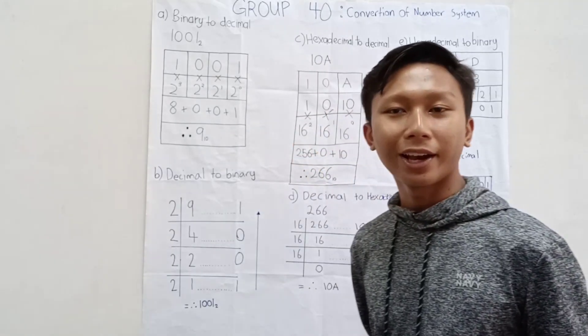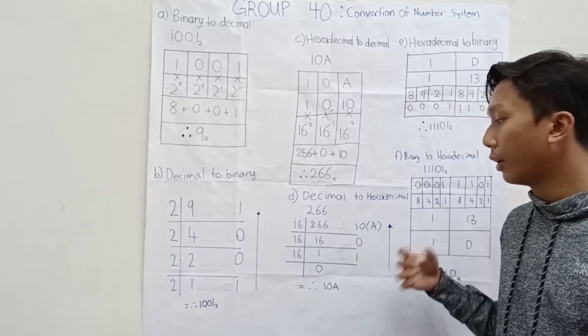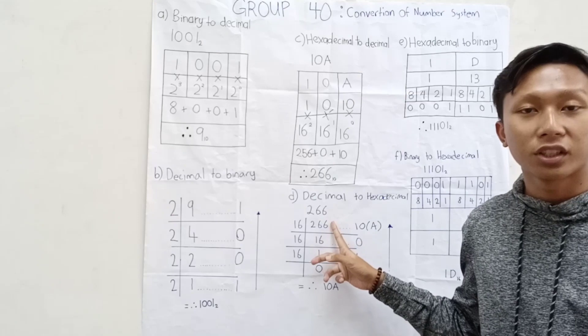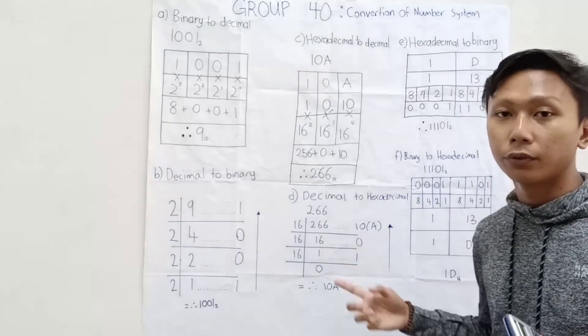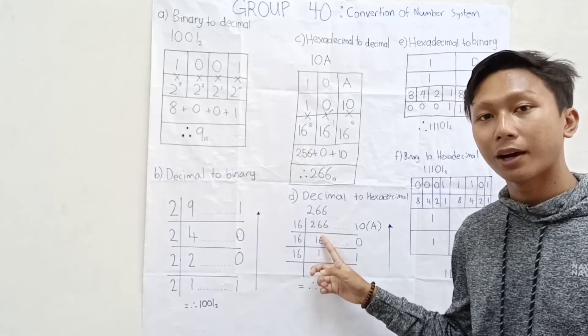I'm with me again, Khairul. We will go to decimal to hexadecimal. Okay, let's say we had our decimal 266. Okay, how do we convert it to hexadecimal? Okay, this is one of the ways. At first, we divide 266 divided by 16.